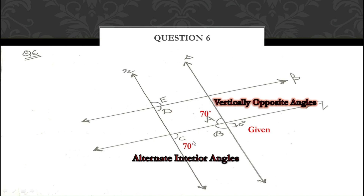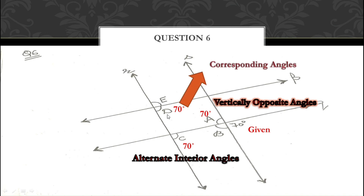You can also find angle C using corresponding angles: skipping angle B from the given 70°, angle C = 70° by corresponding angles. Either way the measurement is the same. Then angle D = 70° because angles C and D are corresponding angles — skipping one angle on the same side of the transversal gives a corresponding angle.